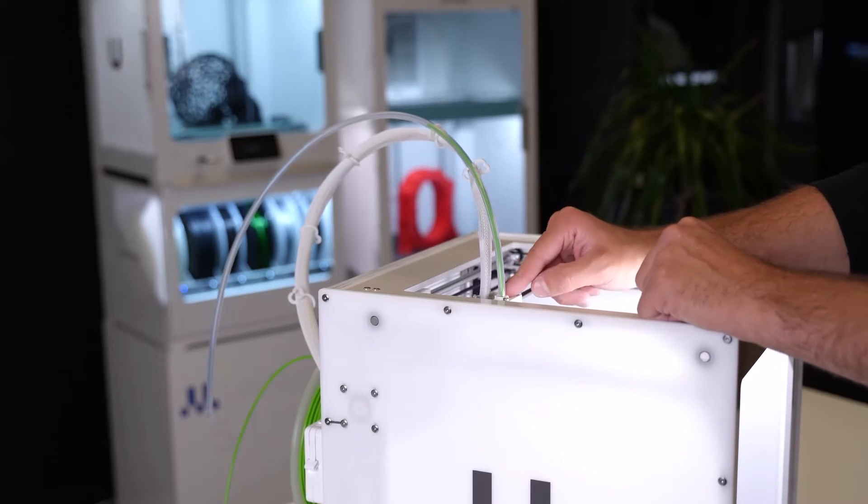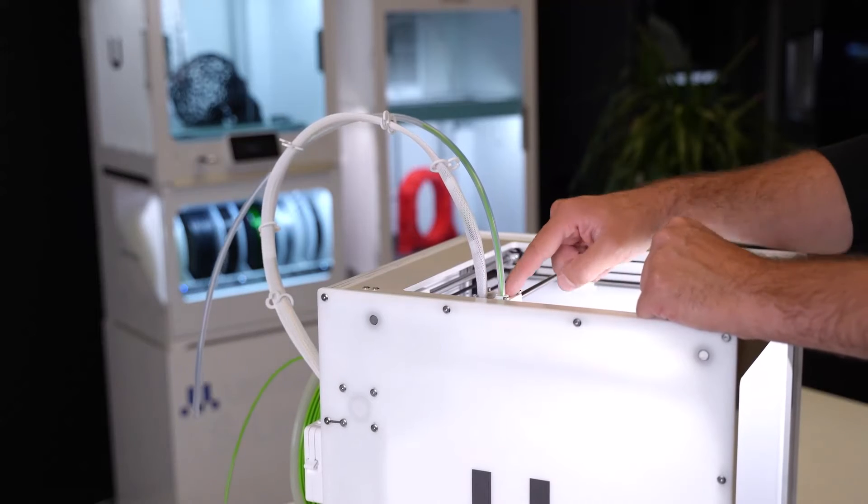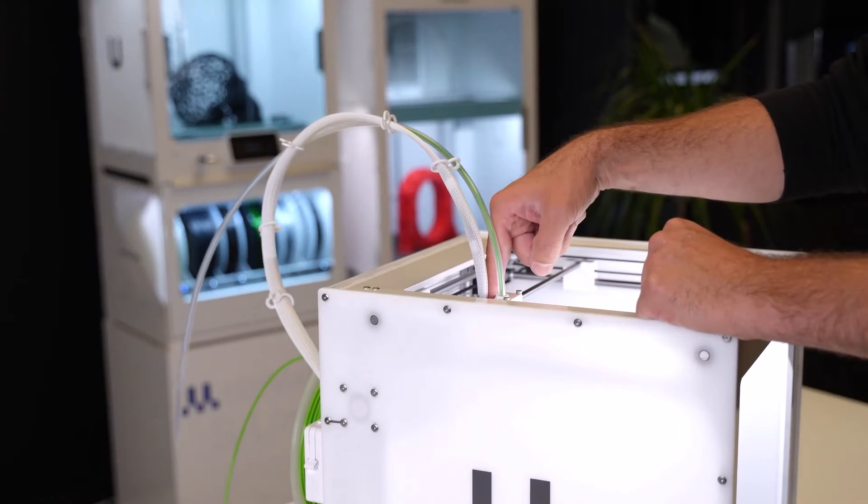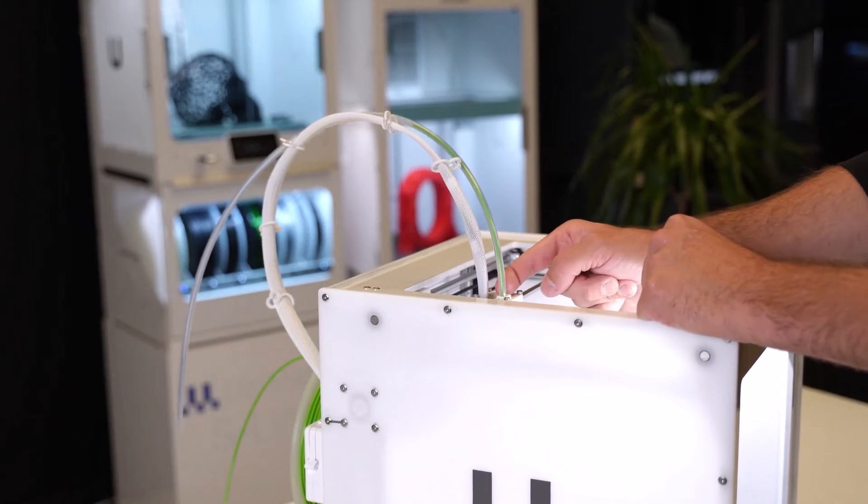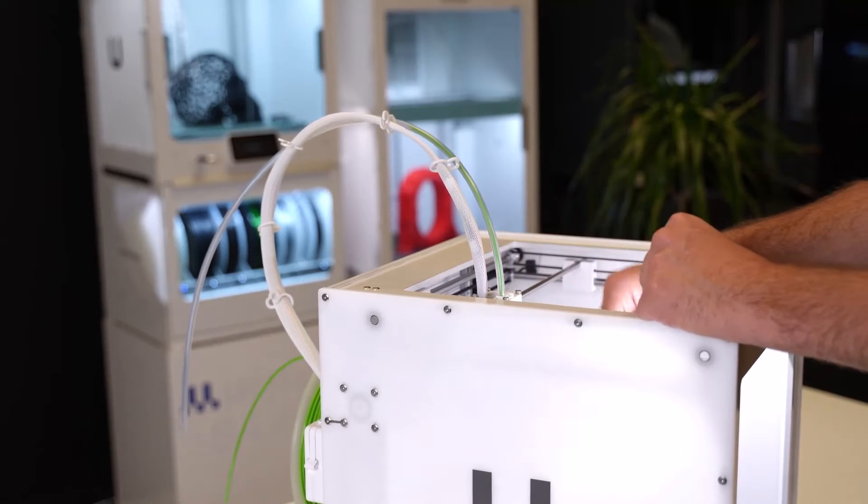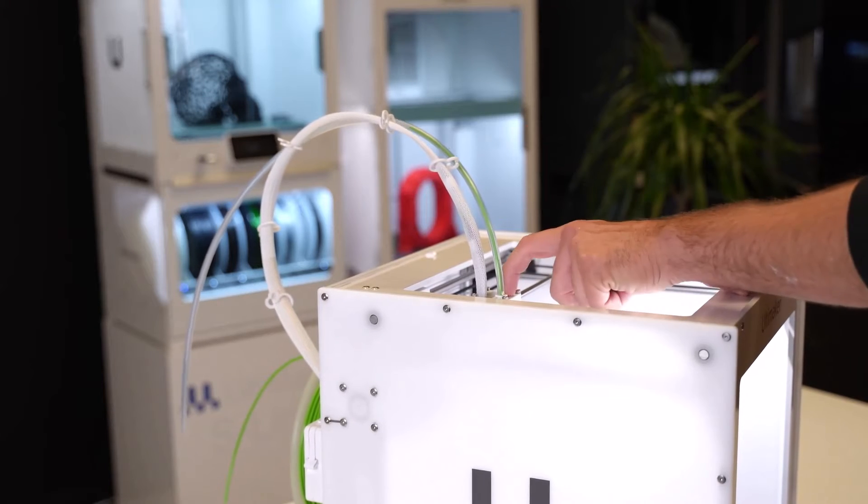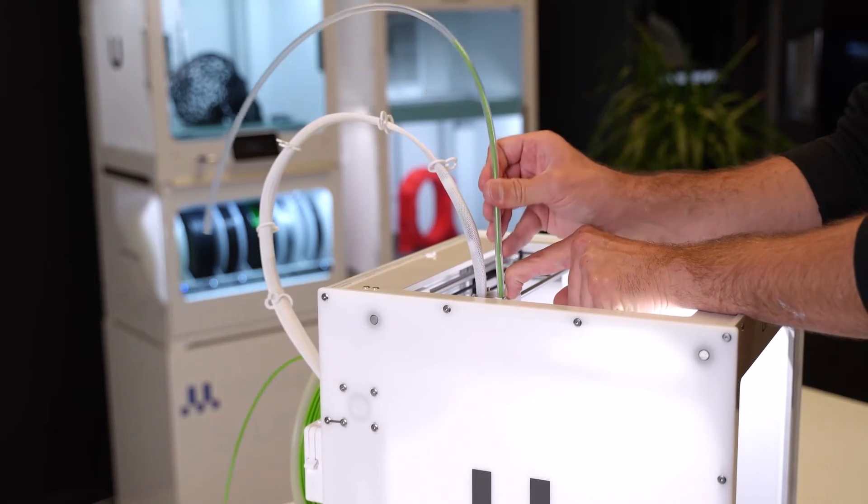Now we need to do the same with the print head side. Be very careful with these because the collets tend to spring and can disappear. Turn it so it's facing the front of the machine, and as we pull it away, keep it controlled and place it on the back of the head.